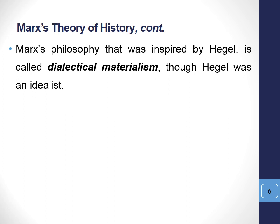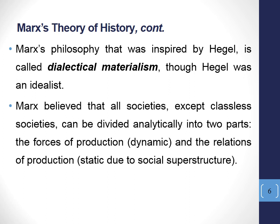Although Marx and Hegel adopted the same dialectic approach, we can find a major difference between Hegel and Karl Marx. Karl Marx was a dialectical materialist, while Hegel was a dialectical idealist. Where all history, according to Marx, evolves around man, around matter. All history, according to Hegel, evolves around the idea. Marx believed that all societies, except classless societies, can be divided analytically into two parts: the forces of production or technology, which is inherently dynamic, and the relations of production, which is inherently static, due to the social superstructure — where social superstructure represents religion, art, and all forms of culture.